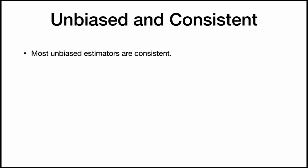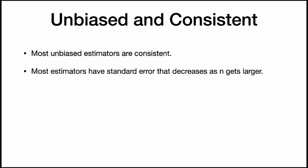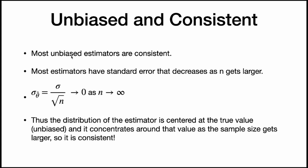Estimators can be both unbiased and consistent, and most unbiased estimators are consistent. Most estimators, like x-bar, have a standard error that decreases as n gets larger — in statistics, we have formulas where we divide by the square root of n. So the standard deviation of our estimator theta-hat equals some standard deviation divided by the square root of n. As n gets bigger, this denominator grows, the standard error approaches 0, and because our estimator was unbiased and centered at the true value, it gets narrower and concentrates around that value. That means it's consistent.